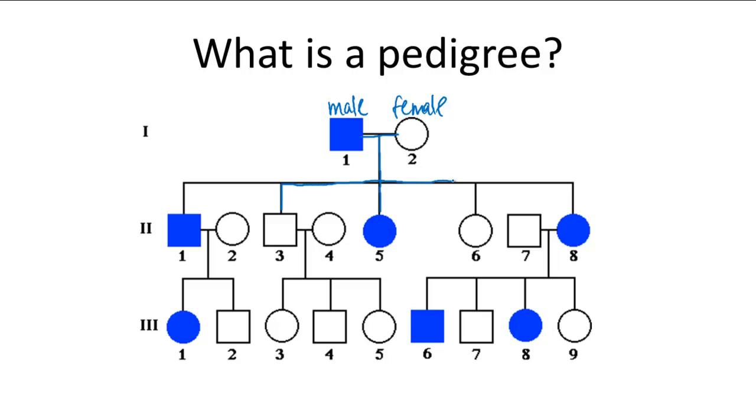So let's say that this pedigree chart shows curly hair, or it's examining the trait curly hair. And so any individual that's colored in blue exhibits curly hair. In other words, they have curly hair and any individual that's not colored in does not exhibit curly hair.